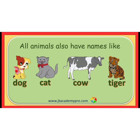As you can see, all animals also have names — like dog, cat, cow, tiger. Just like people's names, animals also have particular names. We can also use many other animal names like ostrich, leopard, zebra, and goat. We can use many other names for animals as well.